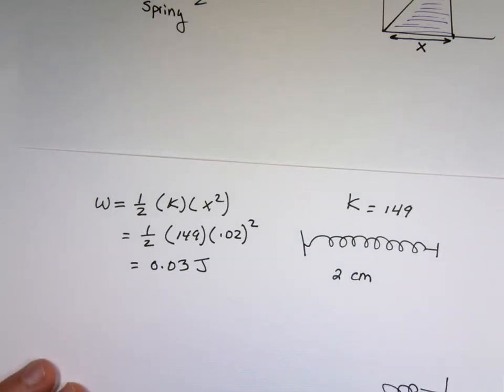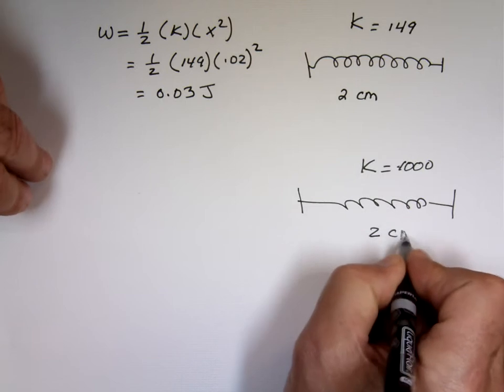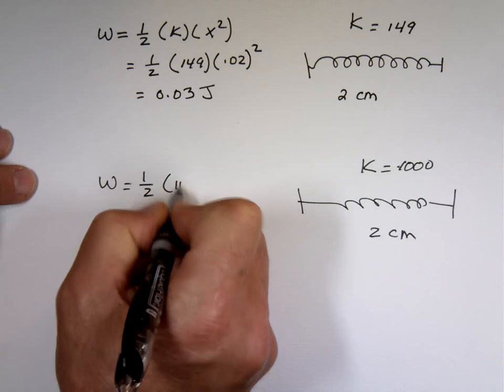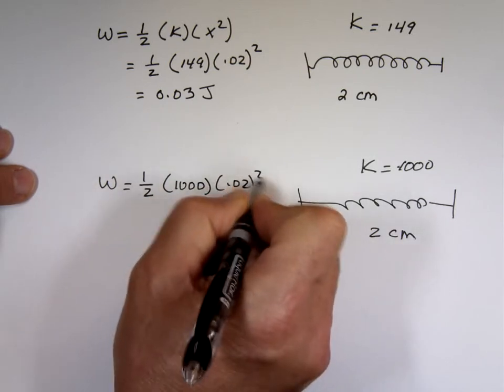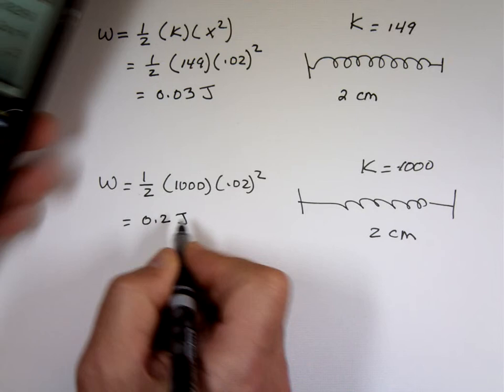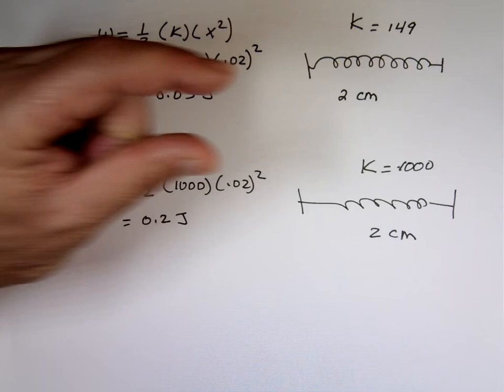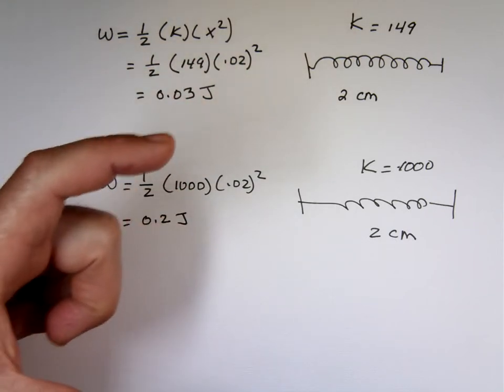On the other hand, if I pick another one with a large value of k, really one of those hard springs, k equals 1000. And I compress that two centimeters again, or stretch it two centimeters, how much energy is stored in it? It's one half k, which is 1000, times 0.02 squared. That's 0.2 joules. I'm not talking about compressing it that much, just a hair, two centimeters. Normally with these toys, you compress them like 5, 6, 7 centimeters, it's a decent amount there.